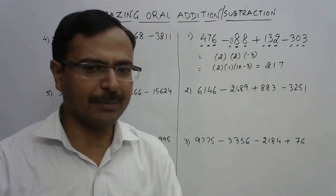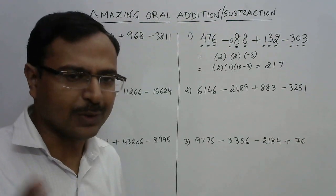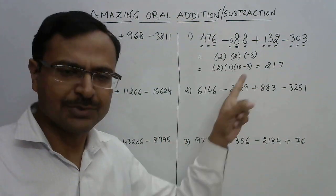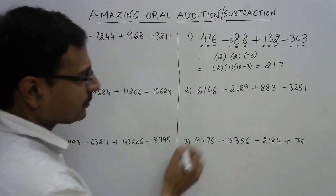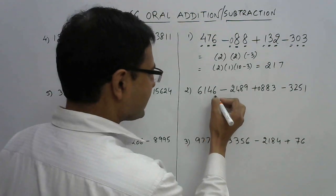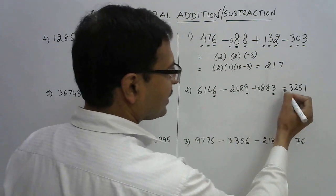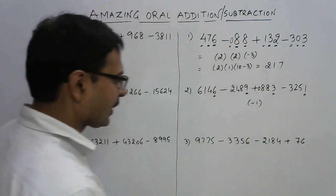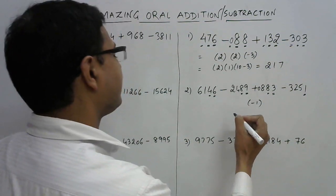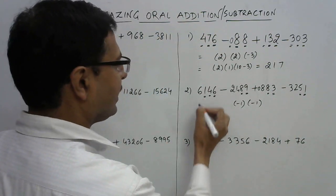Let's see the second question — you can pick up a calculator and verify. We have 4 digits, 4 digits, 4 digits, and 3 digits, so I'll put a zero here — even if I don't, it's fine. Now: 6 minus 9 is minus 3, minus 3 plus 3 is 0, 0 minus 1 is minus 1. Next: 4 minus 8 is minus 4, minus 4 plus 8 is 4, and 4 minus 5 is again minus 1.